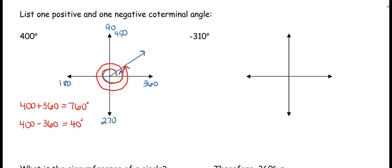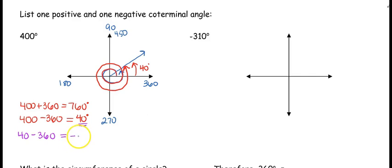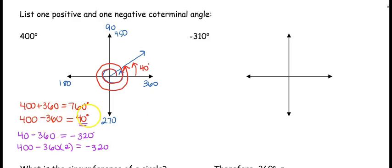Since 40 degrees is still positive, I still need a negative coterminal, which means subtracting 360 again. You can start from where you left off: 40 minus 360 gives negative 320. Or you can start with 400 and subtract 360 twice — either way works. So the negative coterminal is negative 320 degrees.